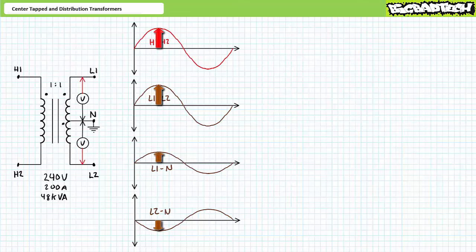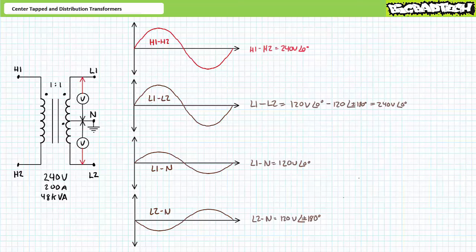L1 also peaks positively and L2 valleys negatively. With ground as the established reference, L1 and L2 are equal in magnitude yet perfectly out of phase with one another. If we were to express these voltages as phasor equivalents, H1 to H2 would be 240 volts at an angle of 0 degrees. L1 to neutral would be 120 volts at an angle of 0 degrees. L2 to neutral would be 120 volts at either positive or negative 180 degrees.